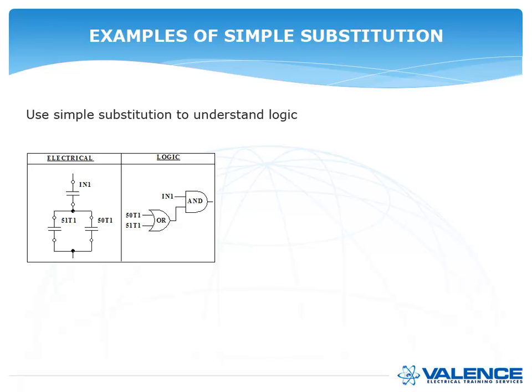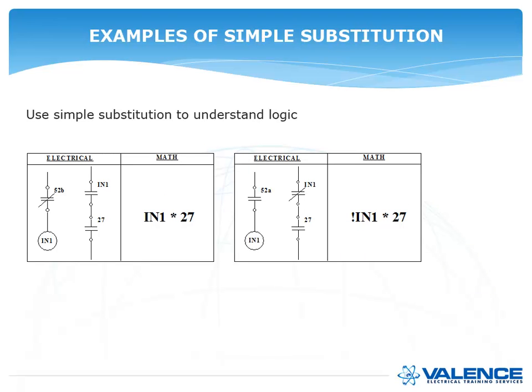Now, here, with this one, you can see that we have a contact called IN1, and it's in series with a contact called 51T1 and 50T1, so the IN1 goes into the AND gate, and then the two contacts that are in parallel, they're an OR gate, so they go together into an OR gate, and the output from that OR gate goes into the AND gate. And with a math equation, this is the same things that we had before. We have IN1 and 27, they're both in series, so that means IN1 AND, that's what that asterisk means, 27. And if you had a normally closed version of that, you would put a NOT in front of IN1 AND 27. That's the exact same thing.